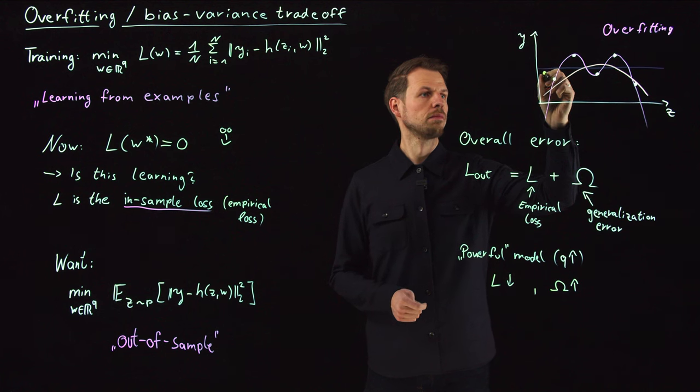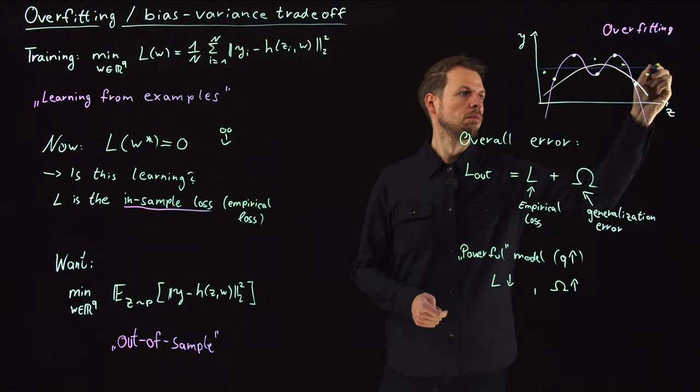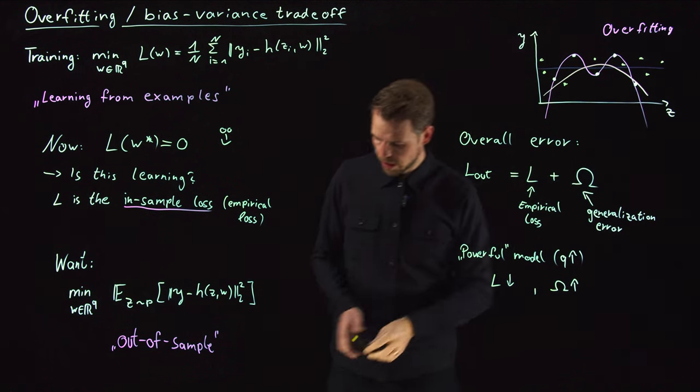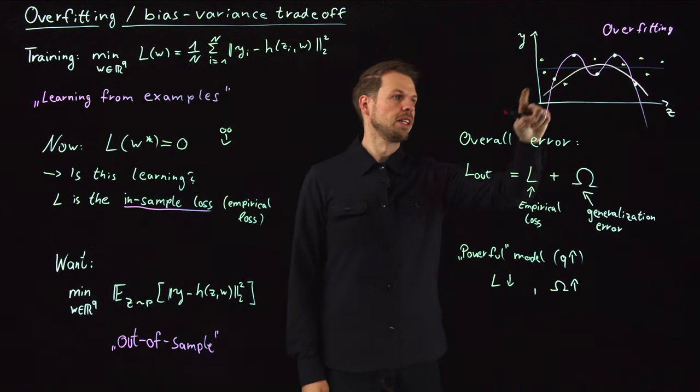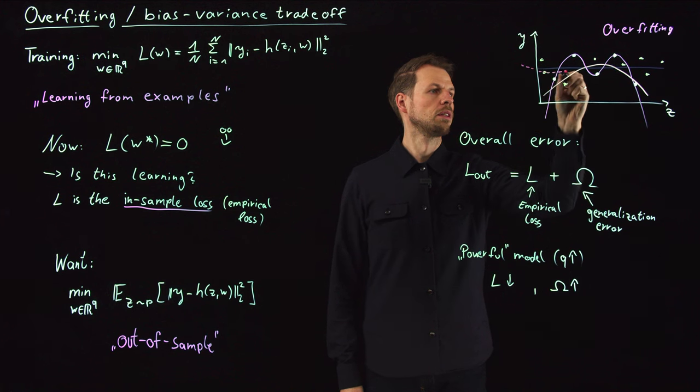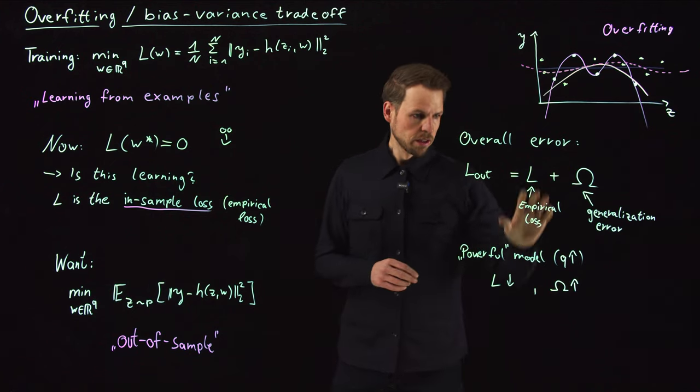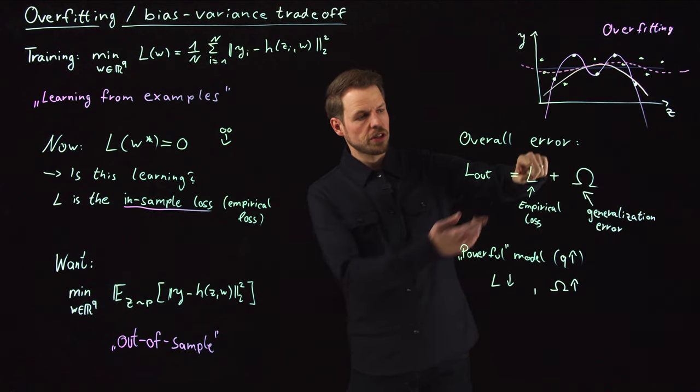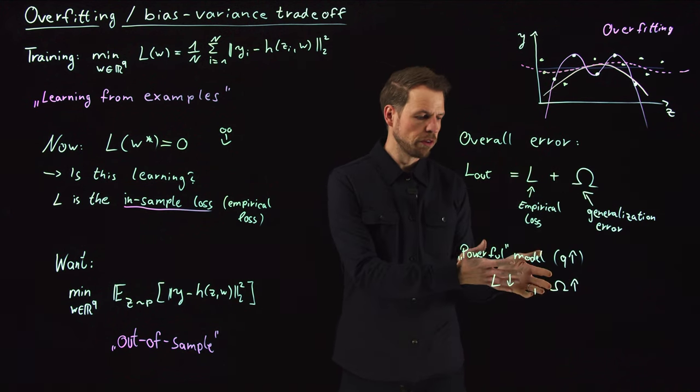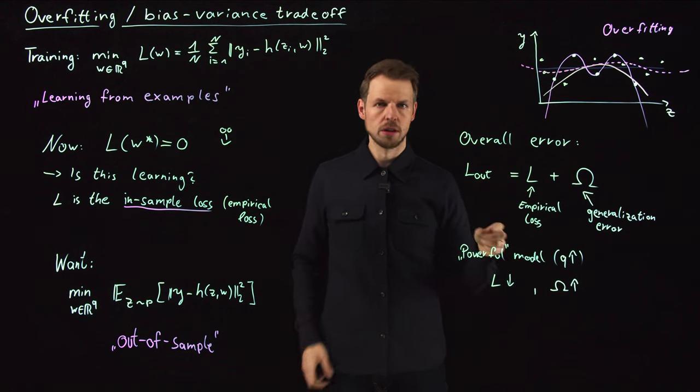Let's say you had more data, something like this maybe. Then you would quickly find that fitting this pink model would give you maybe something like this. You still have - now you have a larger in-sample loss, clearly, but this generalization bound is sort of the overfitting problem. If you have too many degrees of freedom, you will generalize poorly.